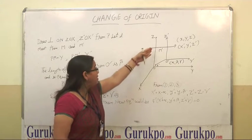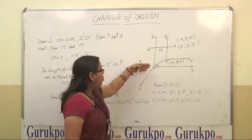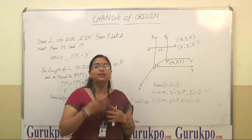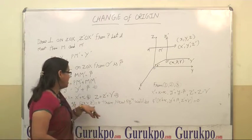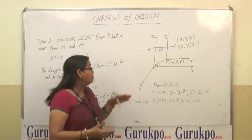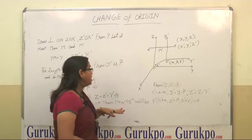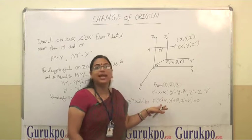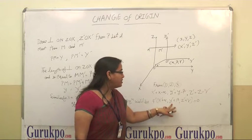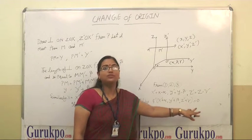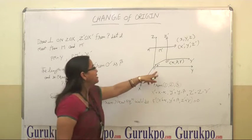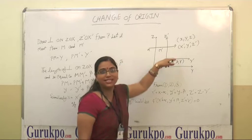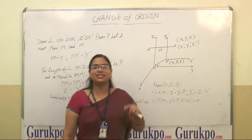Now, suppose in this original axis, OX, OY and OZ, the equation of a function F(X, Y, Z) is equal to 0. Then from change the origin O to O dash, the new equation will be F dash, X dash plus alpha, Y dash plus beta, Z dash plus gamma is equal to 0. Why? Because the change of origin and the relation between X, X dash, Y, Y dash and Z, Z dash.